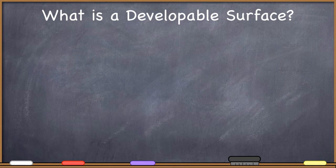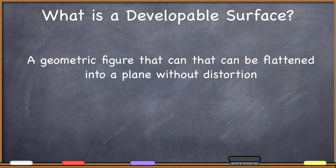A developable surface is a geometric figure that can be flattened into a plane without distortion. Remember that what we're trying to get to is a flat plane. We've got this three-dimensional Earth, and we're trying to get to a flat plane. There is no way to take that globe, that 3D sphere, and put it onto a two-dimensional surface without distortion. So we've got to go through an intermediary — a developable surface, which is some kind of figure that can be transformed into a plane without distortion.